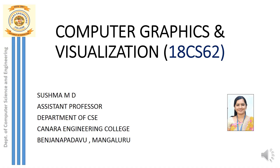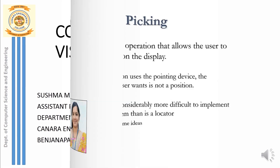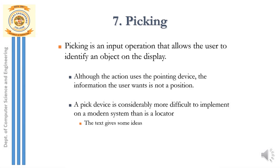Hello Learner! We have a concept here in graphics called picking. So what does picking actually mean? Picking is something that you select. In OpenGL, picking is something like selecting an object from the display window.